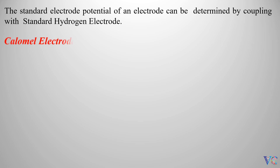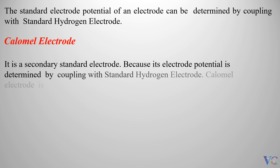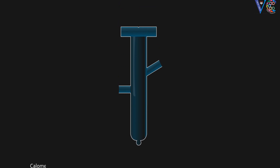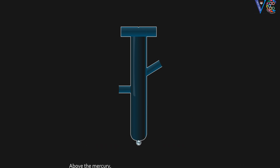The calomel electrode is a secondary standard electrode, because its electrode potential is determined by coupling with the standard hydrogen electrode. The calomel electrode is also called the mercury-mercurous chloride electrode. The calomel electrode consists of a glass tube with a small bulb at the bottom. In the bulb, mercury is placed.